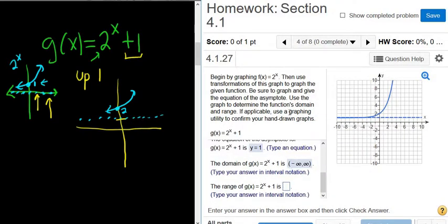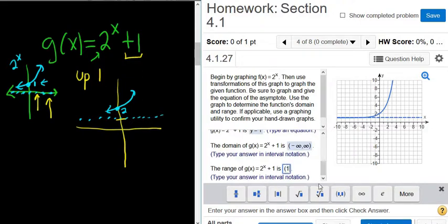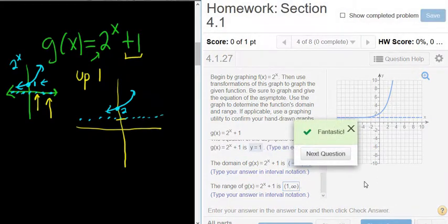The range. The range is all the y values. So the smallest y value, well, there's a dotted line at 1, so it never touches there. But it's from 1 to infinity. You go from the bottom up from 1 to infinity. So it would be parentheses, because it never actually touches the dotted line. So you don't include the dotted line. So 1 to infinity. You always go from the bottom up for the range. Check answer. And that's it.